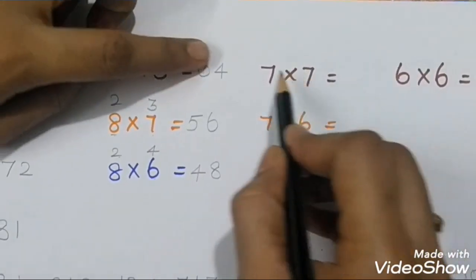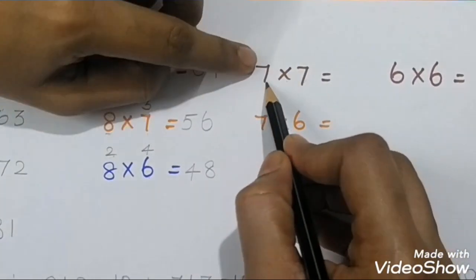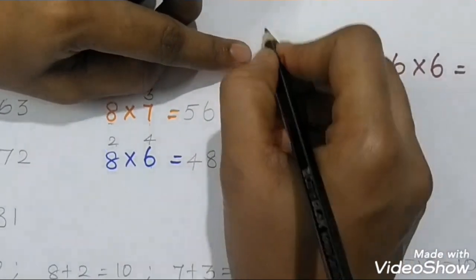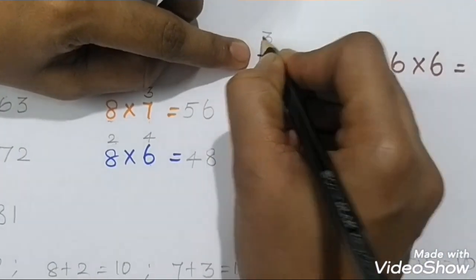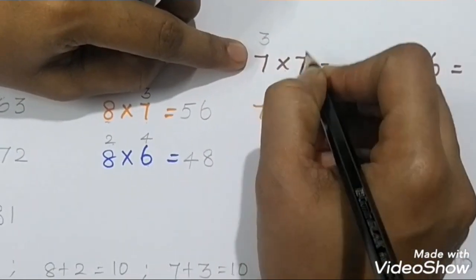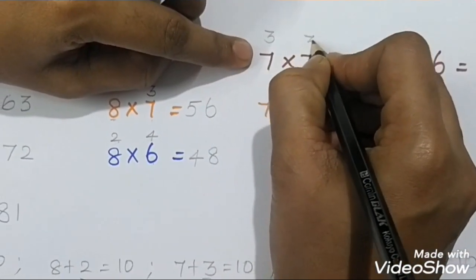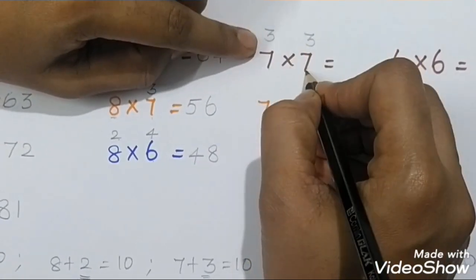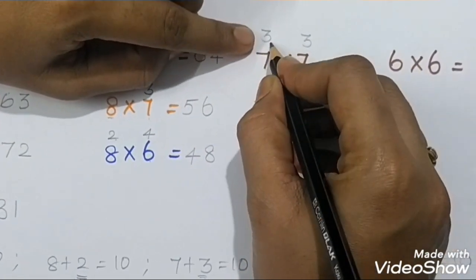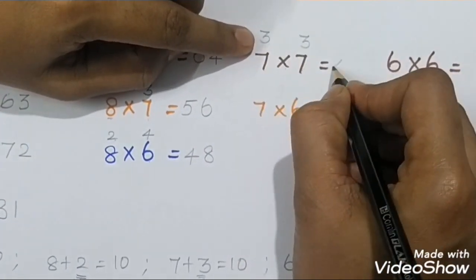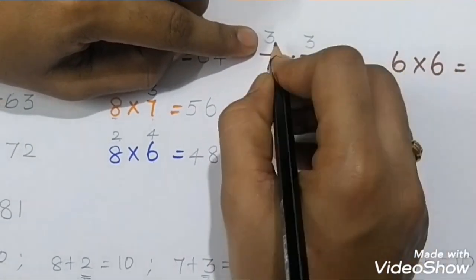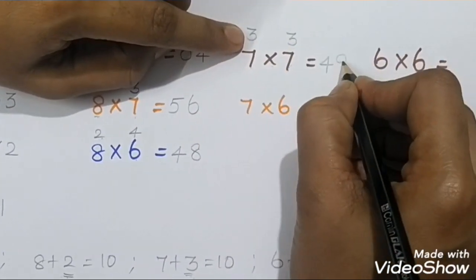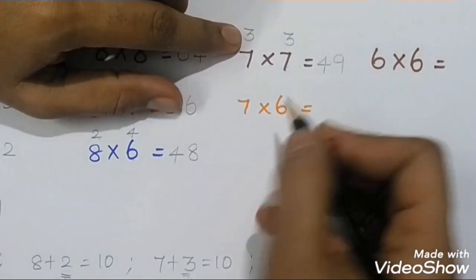For 7 times 7: 7's friend is 3. Cross subtraction: 7 subtract 3 equals 4. Multiply the friends: 3 times 3 equals 9. So 7 times 7 are 49.